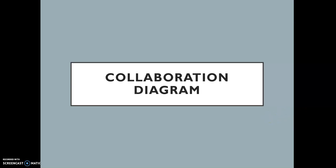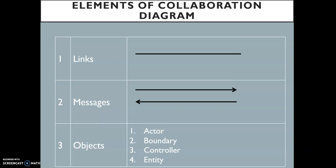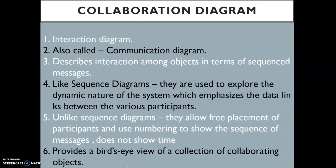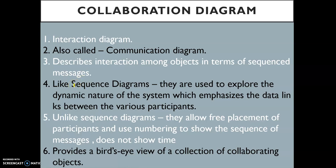We are talking about the collaboration diagram — we know its use, and the different elements which consist of links, messages, and objects. In objects we have actor, boundary, controller, and entity, and we have the symbols of those objects. One thing to keep in mind: it is similar to the sequence diagram, but unlike the sequence diagram, you are free to place the participants anywhere.